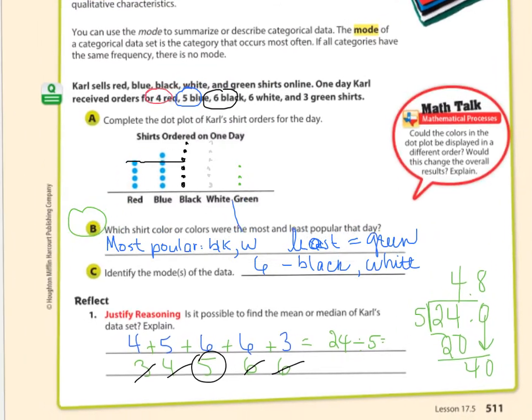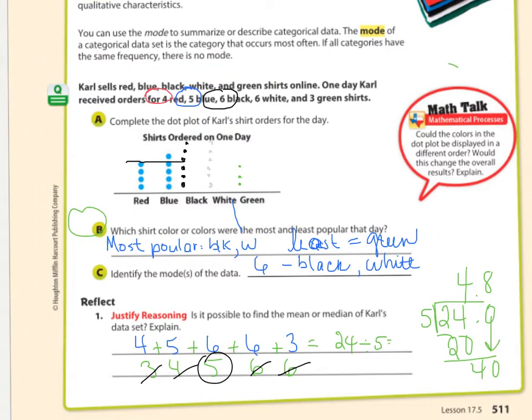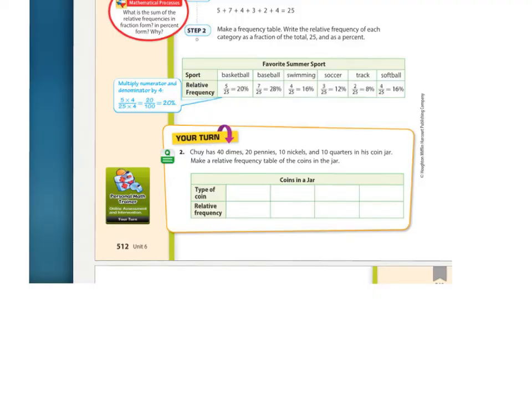Let's look at this math talk question: Could the colors in the dot plot be displayed in a different order? Would this change the overall results? In other words, could you have the red over here and maybe the green right here? Is that going to change your results? No, it won't. The dots will look different, the curve will look different, but that doesn't change the results or the numbers.